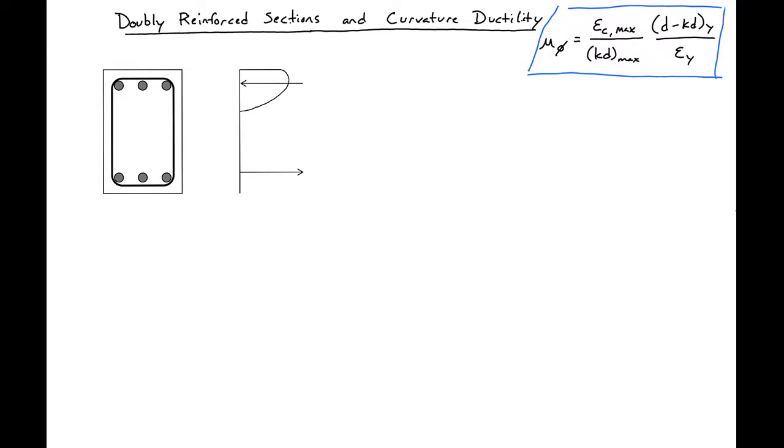We'll first look at the forces in our cross section. As before, we'll have our concrete compressive force, which we can represent by the stress distribution. We'll have our steel tension force, and then we'll now have a compressive force in our top steel.